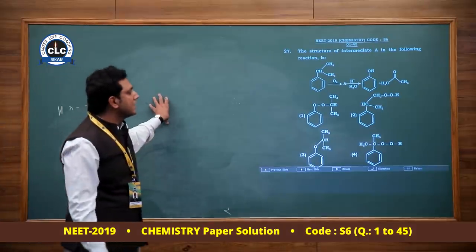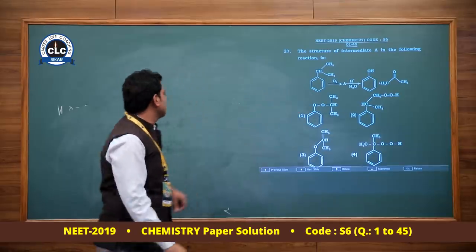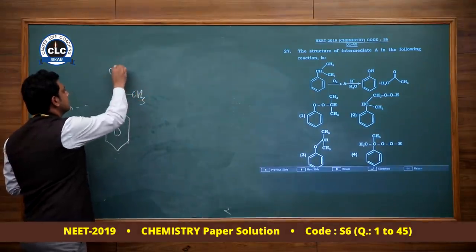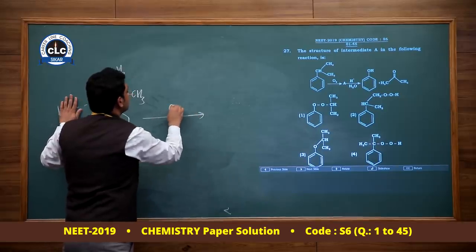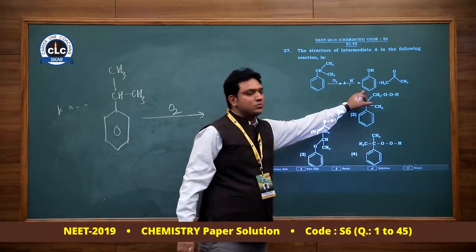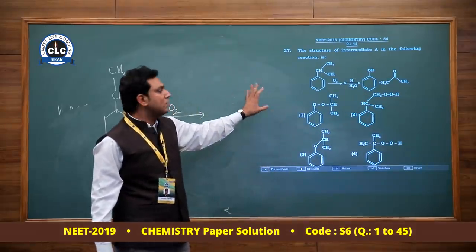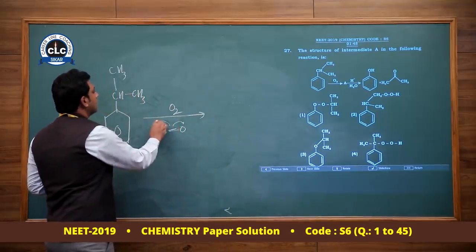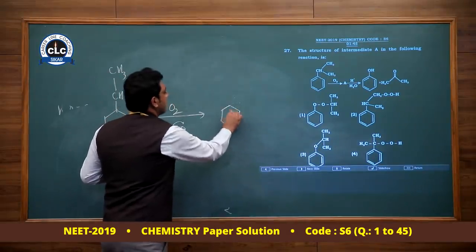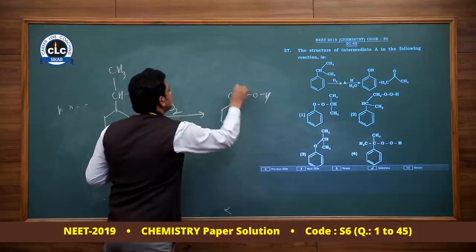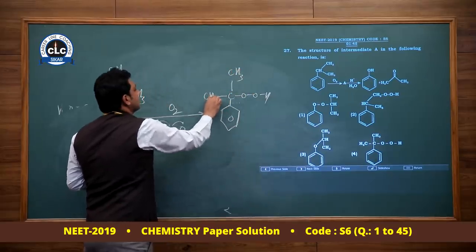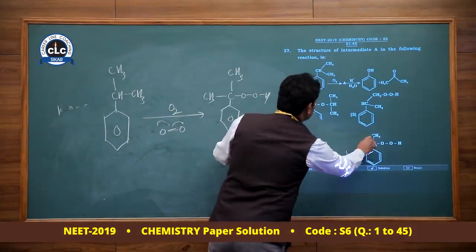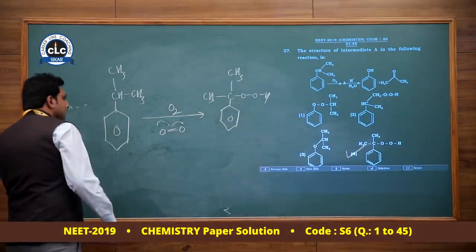Structure of intermediate A in the cumene process: cumene (isopropyl benzene, C6H5-CH(CH3)2) reacts with O2 via free radical mechanism — O2 inserts at the weak C-H bond giving cumene hydroperoxide (C6H5-C(CH3)2-OOH). Then H⁺/H2O gives phenol + acetone. This is the commercial method for phenol production. Intermediate A is cumene hydroperoxide — option 4. Most difficult to protonate: phenol's lone pair is involved in resonance with the ring, reducing basicity, making protonation most difficult. Answer: option 2 (phenol).